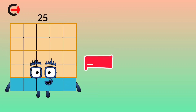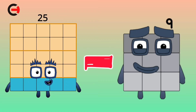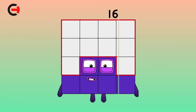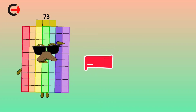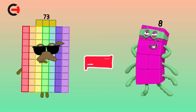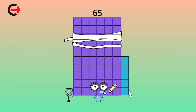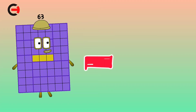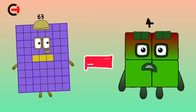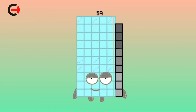25 minus 9 is equal 16. 73 minus 8 is equal 65. 63 minus 4 is equal 59.